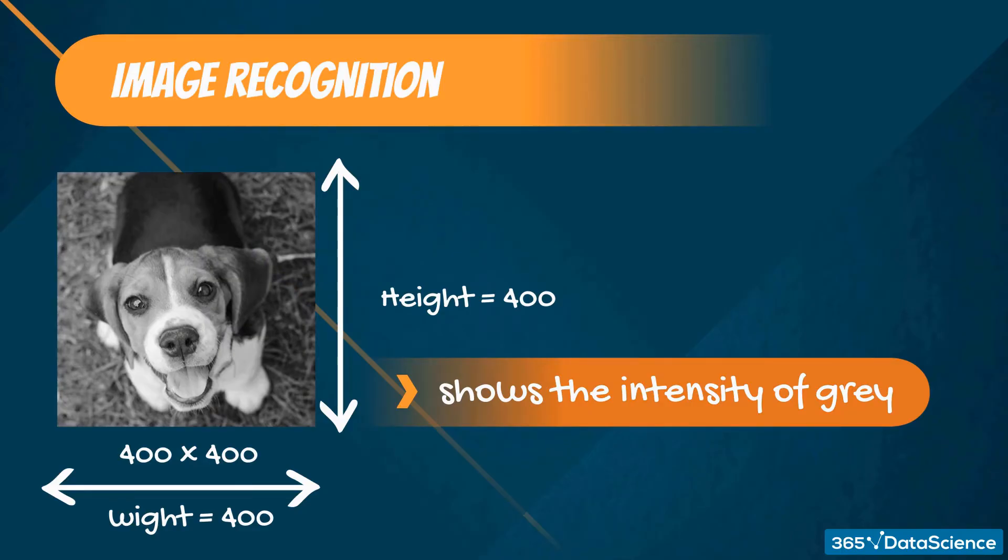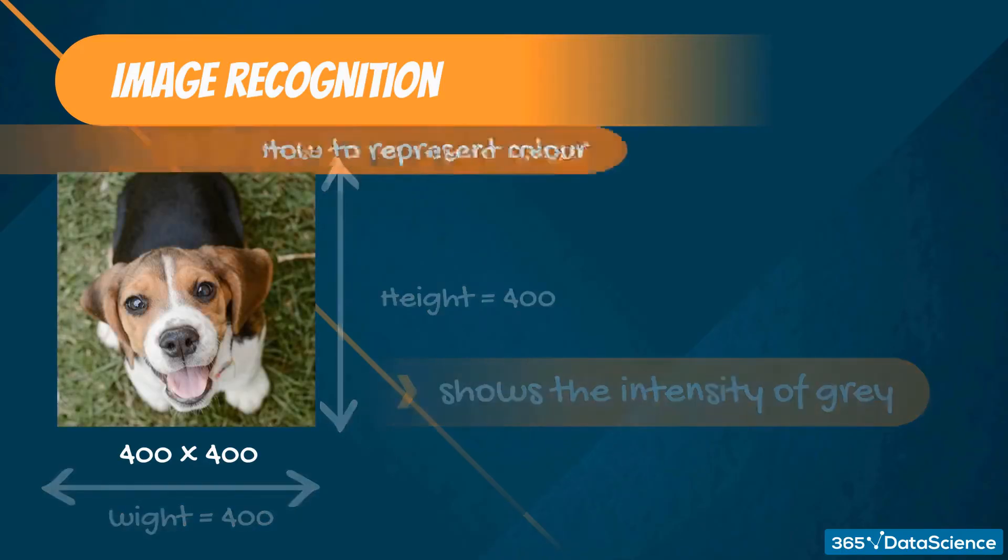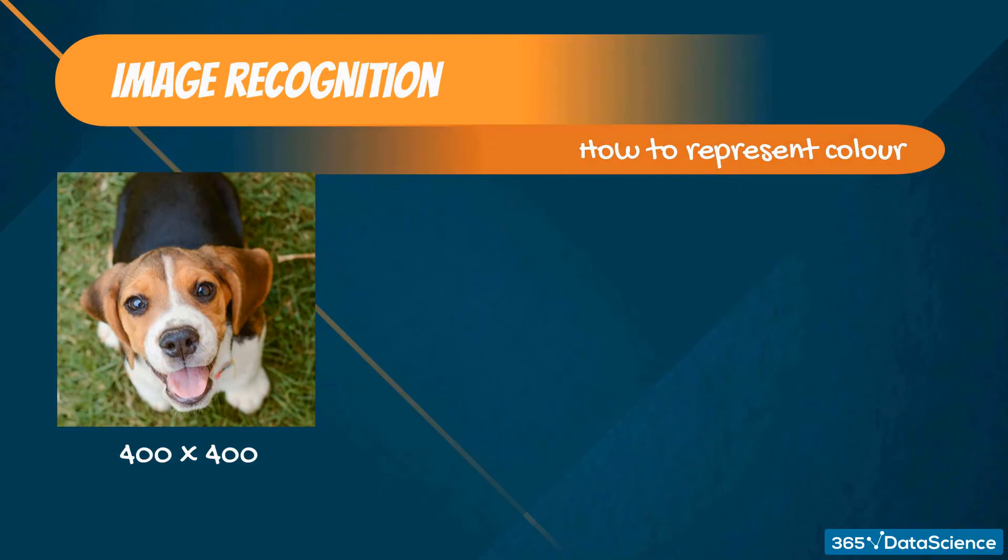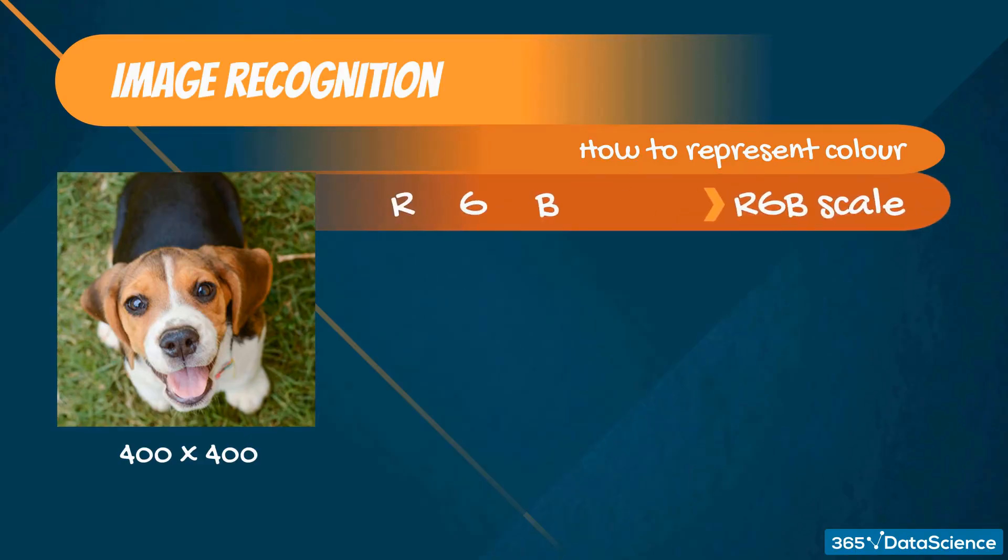But grayscale is boring, isn't it? What about colored photos? Well, so far we had two dimensions, width and height, while the number inside corresponded to the intensity of color. What if we want more colors? Well, one solution mankind has come up with is the RGB scale, where RGB stands for red, green, and blue.